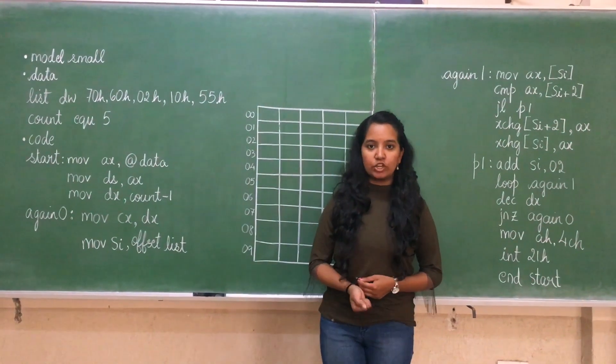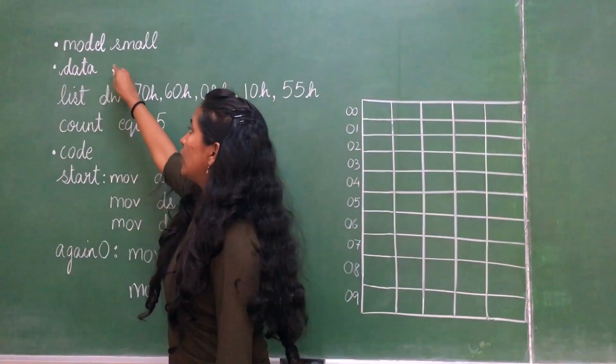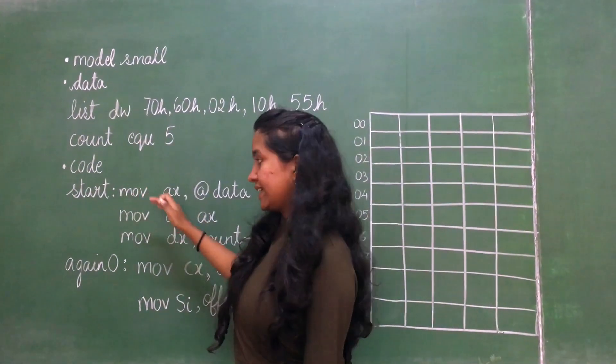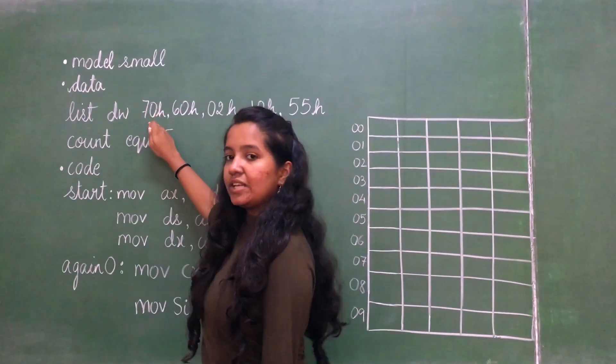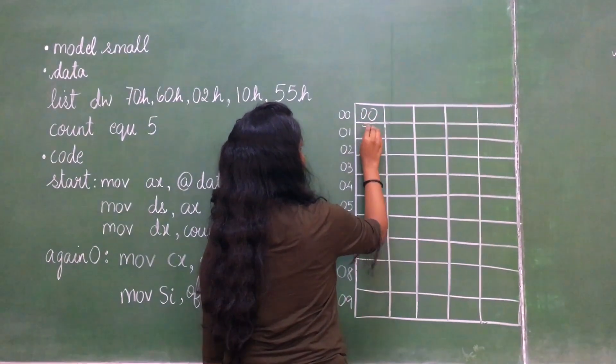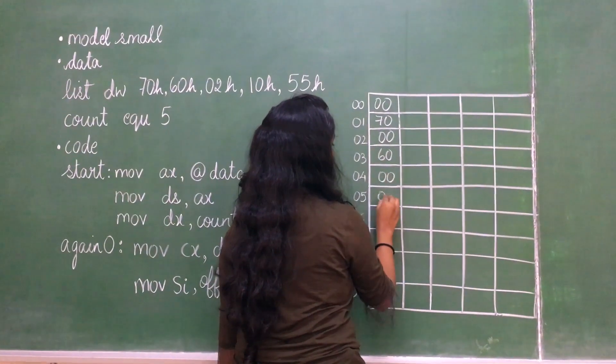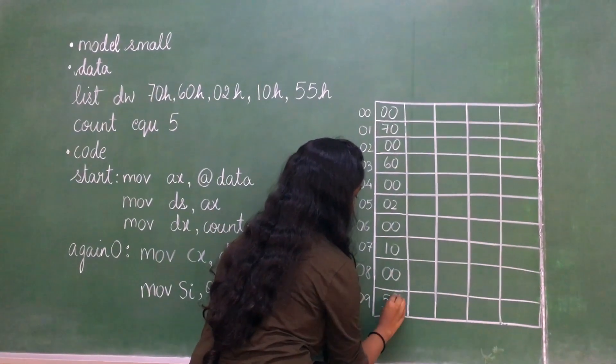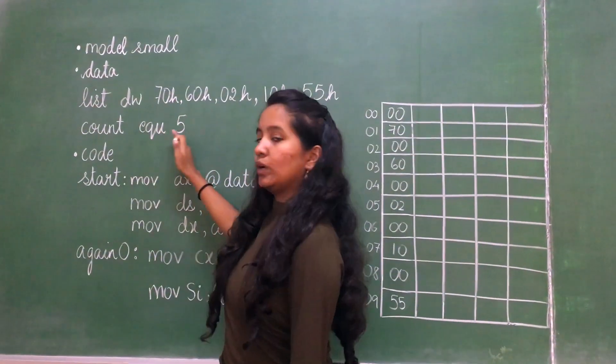This is a program to execute bubble sort in assembly language. The first line is .model small. It has two segments: one data segment and one code segment. Data segment stores data and the code segment has the executable buffer. This line is a list of elements where DW refers to data word and each element is 16 bits. There are 5 numbers under consideration here, so initially the count is equal to 5.